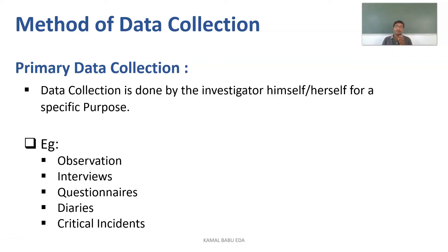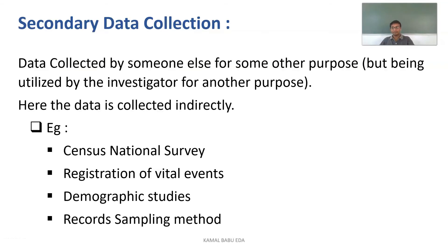Whenever you are doing an observation, you observe a person for a particular purpose. In primary data collection, it is mainly pertaining to the investigator — for a specific focus, we are collecting data from an individual. In secondary data collection, data is collected by someone else for the same purpose, and we take already-existing data to be utilized by the investigator for another purpose.